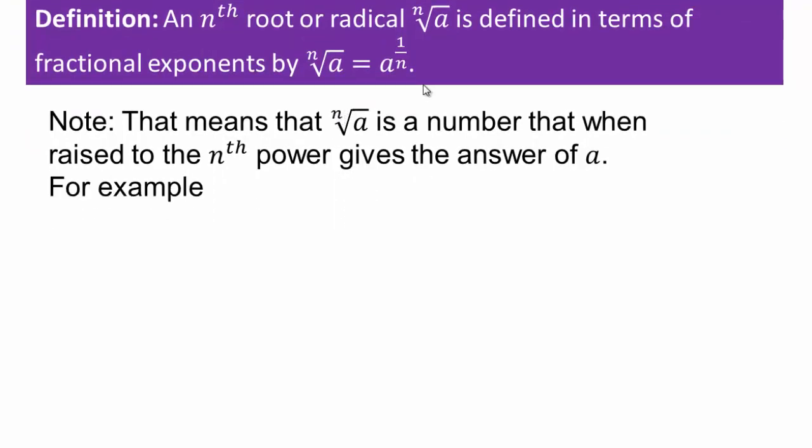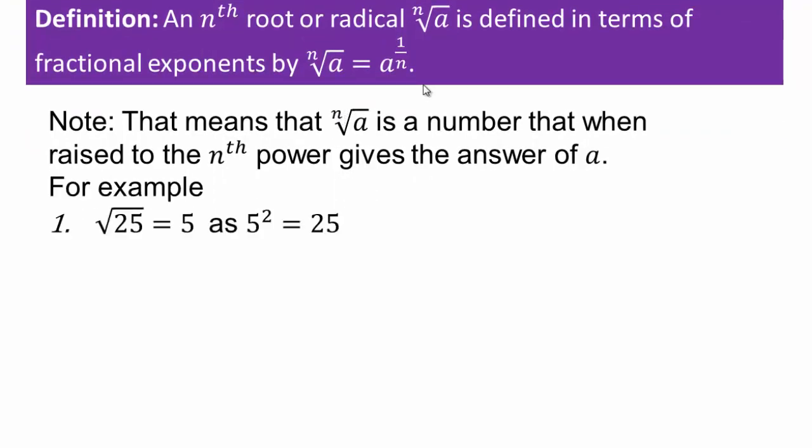For example, square root of 25 — you're looking for something squared that gives you 25, and that would be 5. Cube root of 64 is 4 because 4 cubed is 64. It pays great dividends to remember basic squares and cubes: 1²=1, 1³=1; 2²=4, 2³=8; 3²=9, 3³=27; 4²=16, 4³=64, and so on.